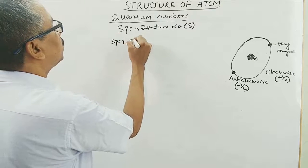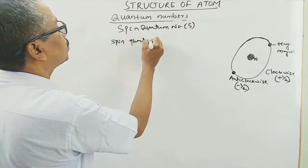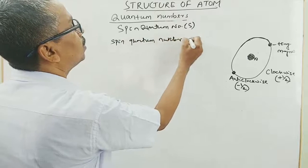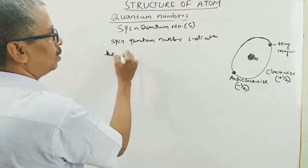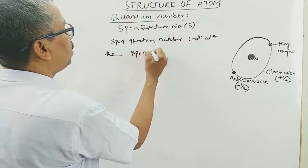Spin quantum number indicates the spin of an electron.